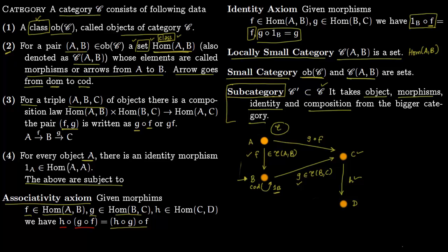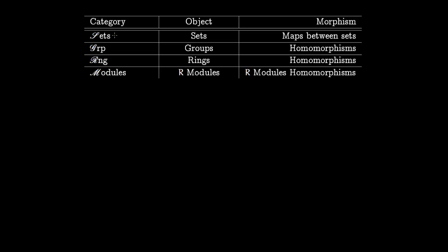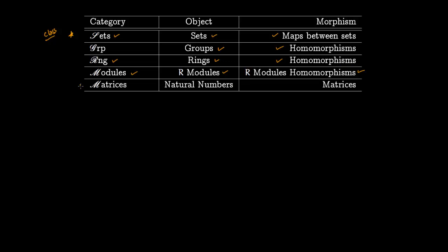Now some examples. The category of Sets: objects are sets and morphisms are maps between sets. This is important because there is no set of all sets — that leads to Russell's paradox — which is precisely why we need category theory: we talk about a class of sets, not a set of sets. Another standard example is the category of Groups: objects are groups and morphisms are group homomorphisms.